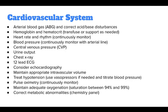For the cardiovascular system, obtain an arterial blood gas, or ABG, and correct acid-base disturbances. Monitor hemoglobin and hematocrit, and transfuse or support as needed. Continuously monitor heart rate and rhythm, and blood pressure with an arterial line. Monitor central venous pressure, or CVP, urine output, and obtain a chest x-ray and 12-lead ECG. Consider echocardiography.